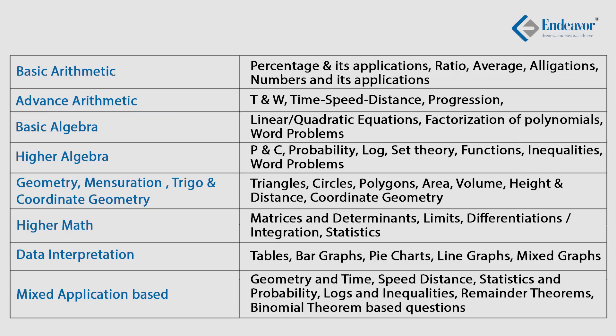The seventh unit is data interpretation. Though it has not been asked consistently every year, last year it was quite prominent — there were 4 to 5 questions, and they were non-MCQ format, meaning students had to key in the answer directly without options. The eighth unit is mixed application-based questions, where concepts from multiple chapters are combined. A typical question is 5 to 6 lines long and may blend a quadratic equation with an inequality, statistics, probability, geometry, and distance all in one question, making them more time-consuming to solve.